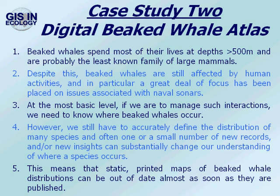At the most basic level, if we were to manage such interactions, we need to know where beaked whales occur. However, we have still to accurately define the distributions of many beaked whale species, and often one or a small number of new records or insights can substantially change our understanding of where species occur. This means that static printed maps of beaked whale distributions can be out of date almost as soon as they're published.